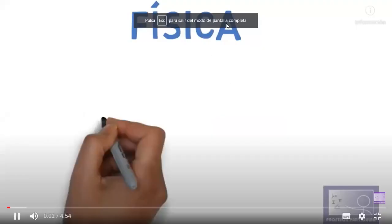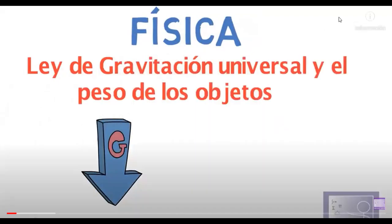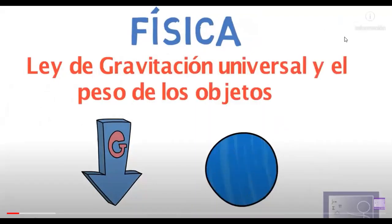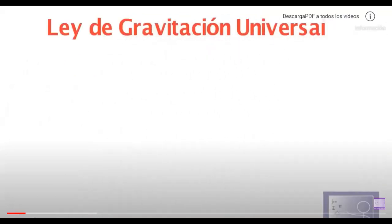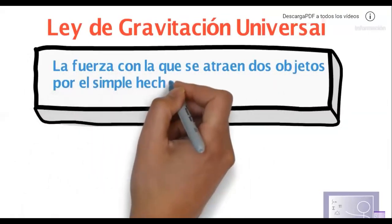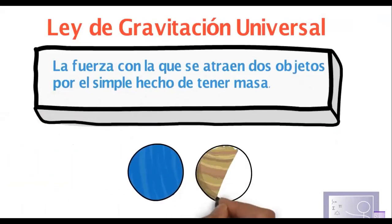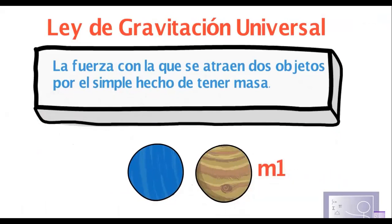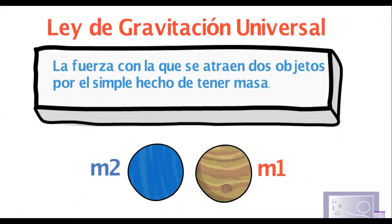Bienvenidos al videotutorial de Física. Presentamos la ley de gravitación universal y el peso de los objetos. Necesitamos comprender lo que es la ley de gravitación universal. Esta nos establece lo siguiente: la fuerza con la que se atraen dos objetos por el simple hecho de tener masa. Si hay dos objetos —pueden ser dos planetas— un planeta tendrá la masa 1 y otro la masa 2. Al tener los dos masas, se van a atraer directamente gracias a su masa.